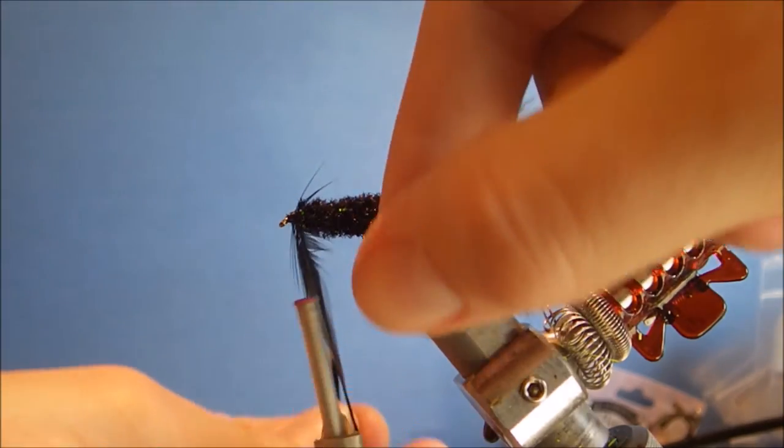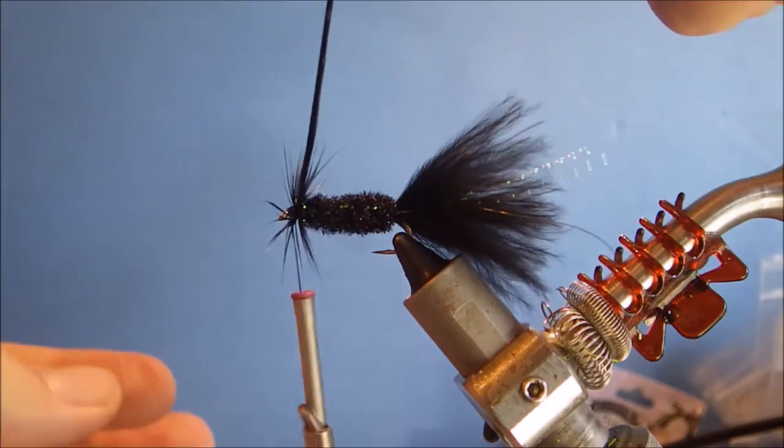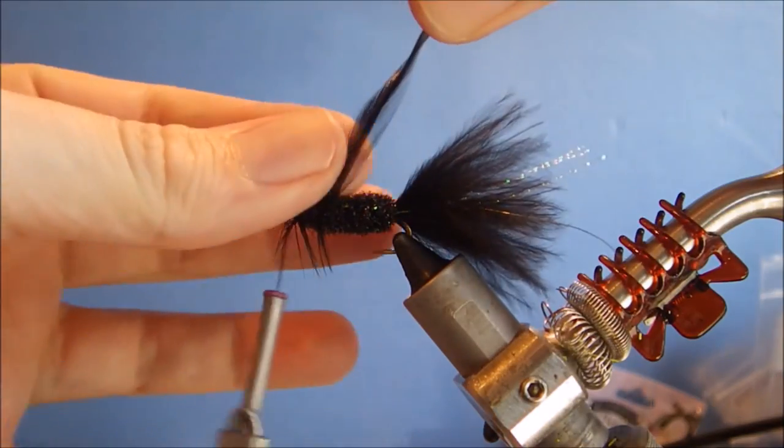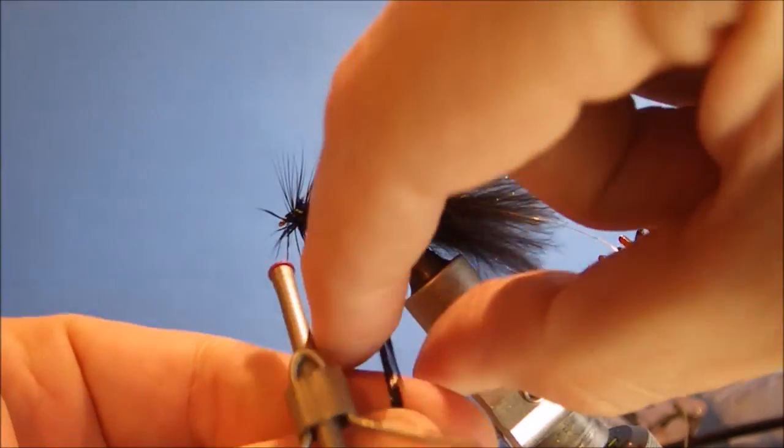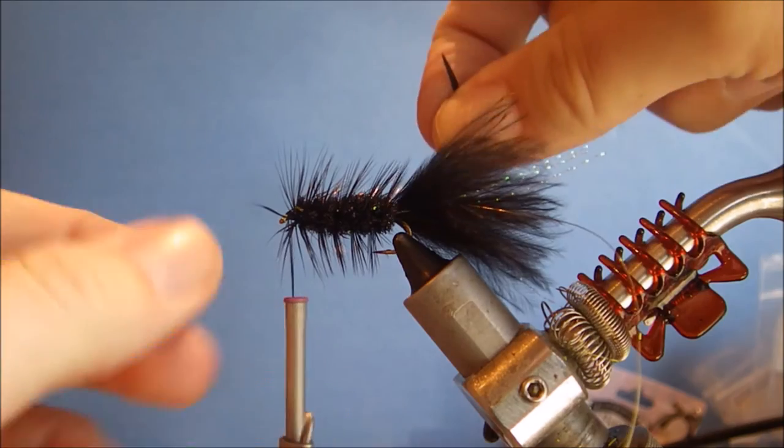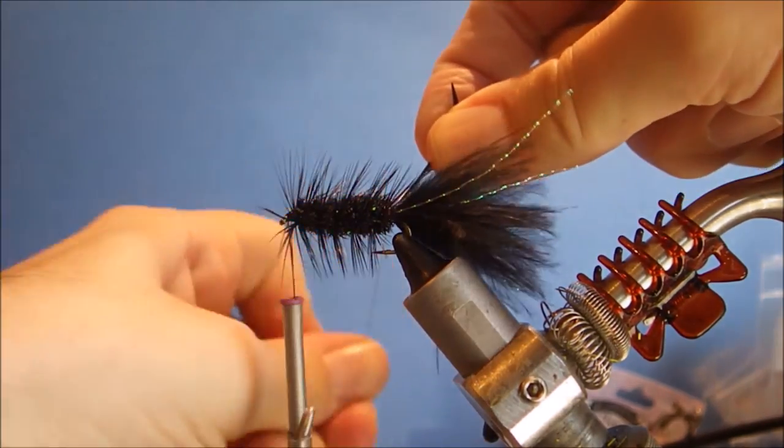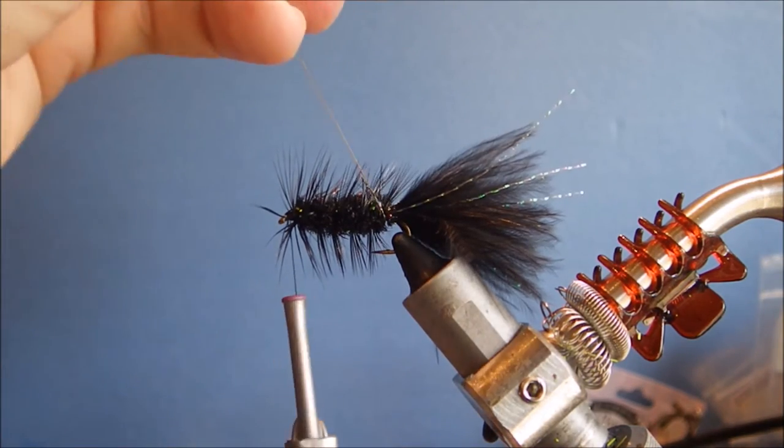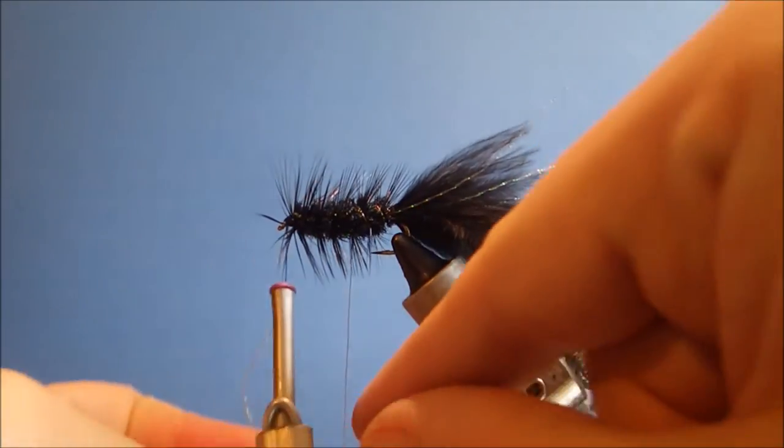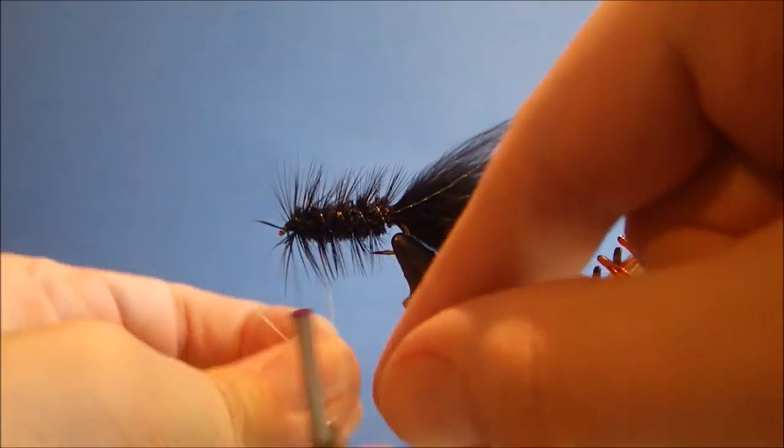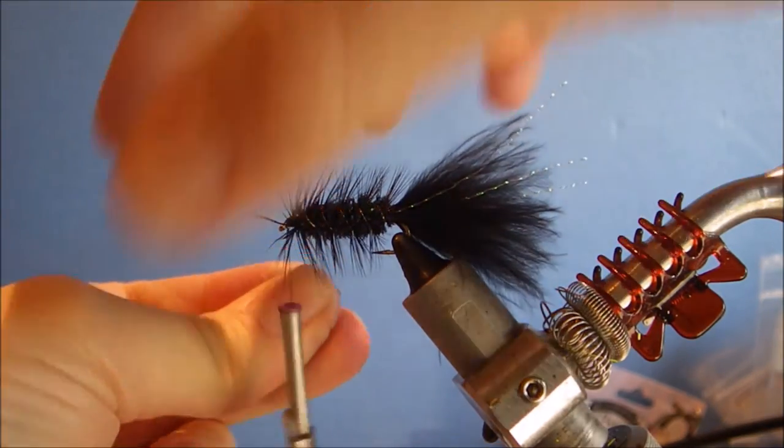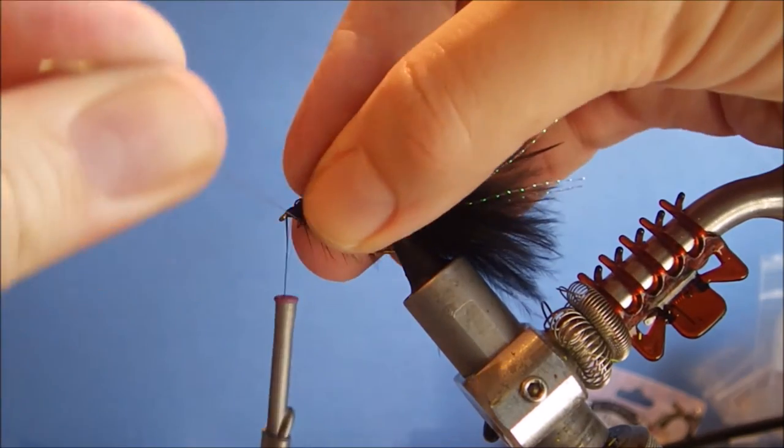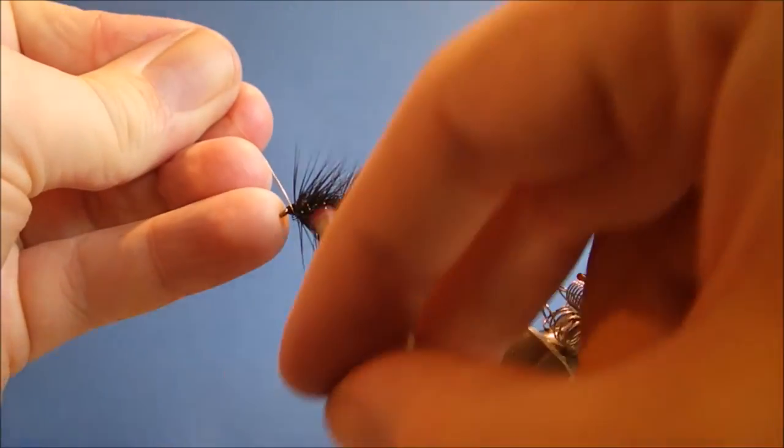Then when you wind your hackle, take a good full turn at the head and then palmer back, nice open turns, until you get to the tail. Don't let go of your hackle, take your wire and take a full straight turn at the back to lock that in and then wind your hackle back up. Now you're always winding away from yourself when you do this and then that means that the hackle and the wire are actually being wound in opposite directions and they cross over each other and that gives you a nice secure grip of the hackle.